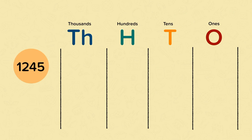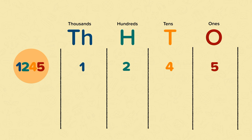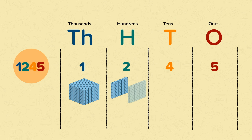Let's have a look at this number now: one thousand two hundred and forty-five. So it's got one thousand, two hundred, four tens and five ones.